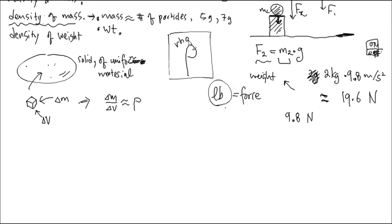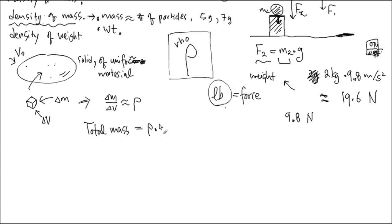If it is a uniform material, you can extend the logic. If the volume of this solid is V0, you sample a tiny bit — knowing it's uniform material — and you can guess the total mass of the entire thing. The total mass is calculated by multiplying the density rho by the entire volume. I have a tiny sample, I get the ratio information, and then I can extend it. Think about it as a Riemann sum: if I dissect that into n pieces — say, 2 million pieces — and add up all the masses, that's the total mass.